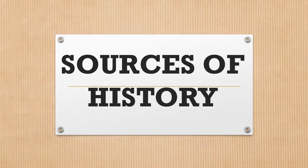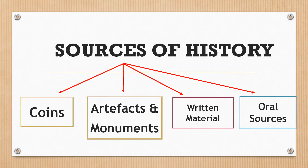Hello dear children, today we are going to study sources of history. There are four main sources of history. The first one is coins, the second one is artifacts and monuments, the third one is written materials, and the fourth one is oral sources.